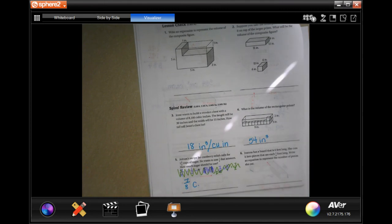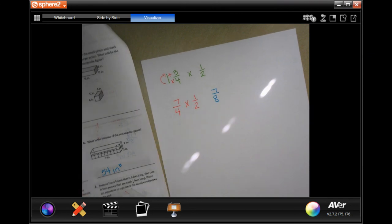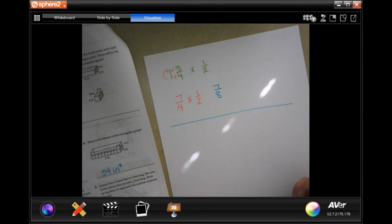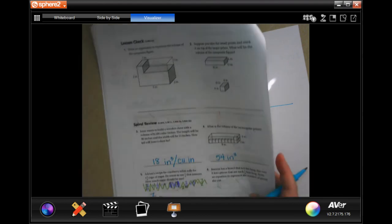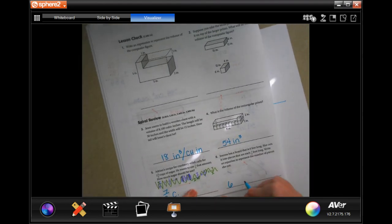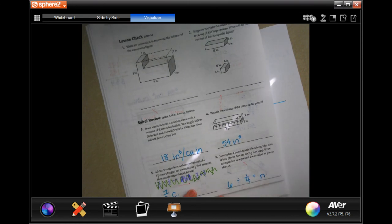Sonya has a board that is 6 feet long. She cuts it into pieces that are each 1/4 foot long. Write an equation that represents the number of pieces she cuts. So it's 6 feet long all together, she's dividing that into 1/4 pieces, and then she'll have the number of pieces. That's it, guys, all done.